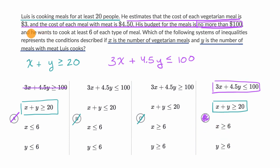We are also told he wants to cook at least six of each type of meal. So that means that X, the number of vegetarian meals, has to be greater than or equal to six. And Y, the number of non-vegetarian meals, also has to be greater than or equal to six. And we see both of these down here, so we can feel pretty good about choice D.